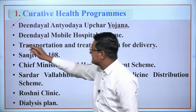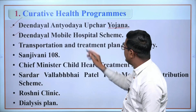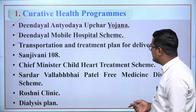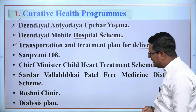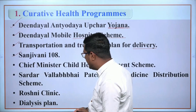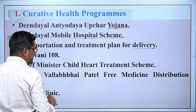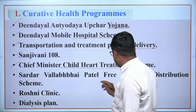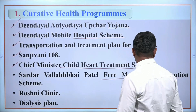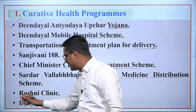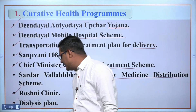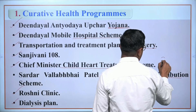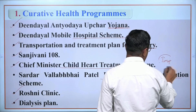Examples of curative health programs include: Deen Dayal Mobile Hospital Scheme, Transportation and Treatment Plan for Delivery, Sanjeevani 108, Chief Minister Child Heart Treatment Scheme, Sardar Vallabhbhai Patel Free Medical Distribution Scheme, Roshni Clinic, and the Dialysis Plan. We will study each of these important health programs in detail.